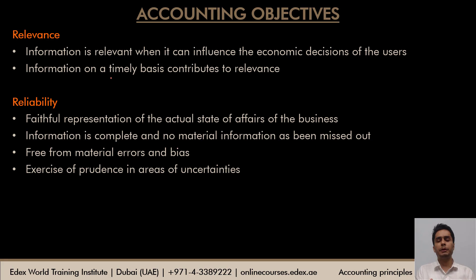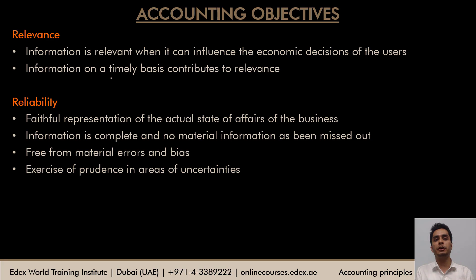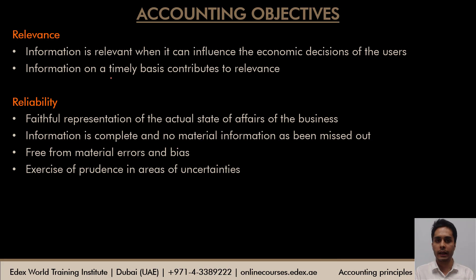The next objective is reliability. Information available in the financial statements has to be reliable for the users, meaning the user has to be confident in relying on the information available. This is possible if the following conditions are met: the information must be a faithful representation of the state of affairs of the business, correctly presented by the financial statements. There should not be any scope for window dressing. Information has to be complete and no material information should be missing. You cannot omit important information — if something is missing, the financial statements are not reliable. The financial statements have to be free from material errors, as any material error could affect the decisions of users.